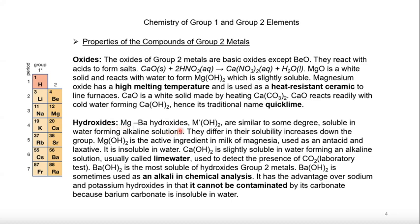From magnesium to barium, the hydroxides are somewhat soluble in water, forming alkaline solutions. Solubility increases going down the group. Barium hydroxide is soluble in water and is used as an alkali. It is a better alkali for chemical analysis because it is not contaminated by carbonate, unlike other group two compounds such as magnesium, beryllium, or calcium compounds which can be contaminated with carbonate.